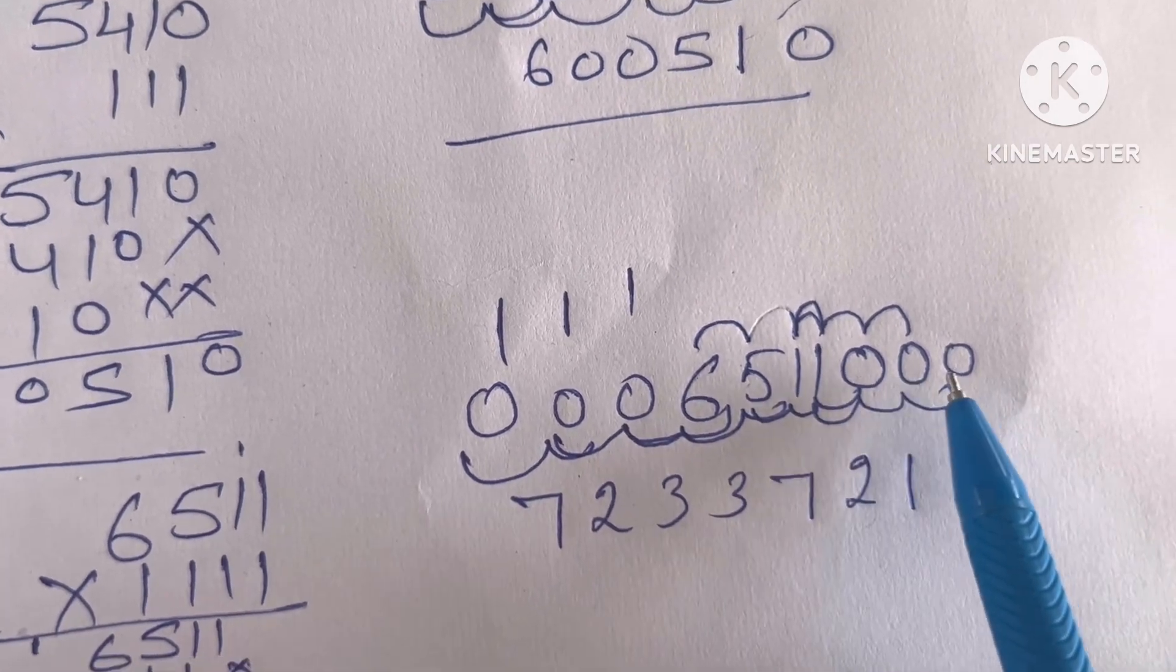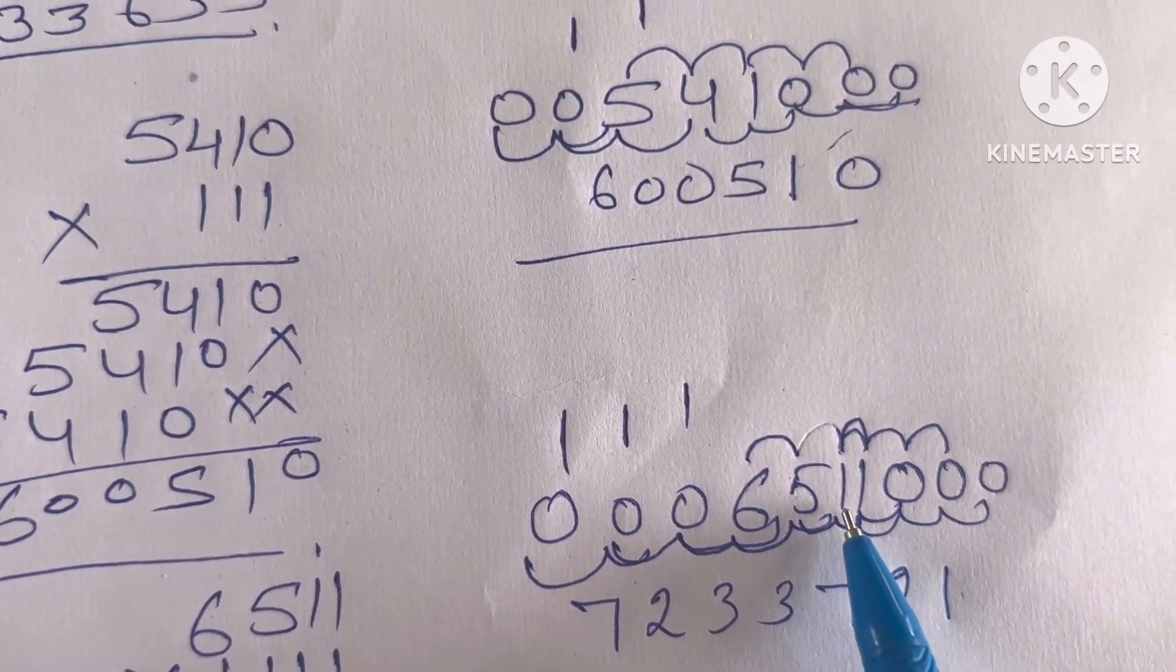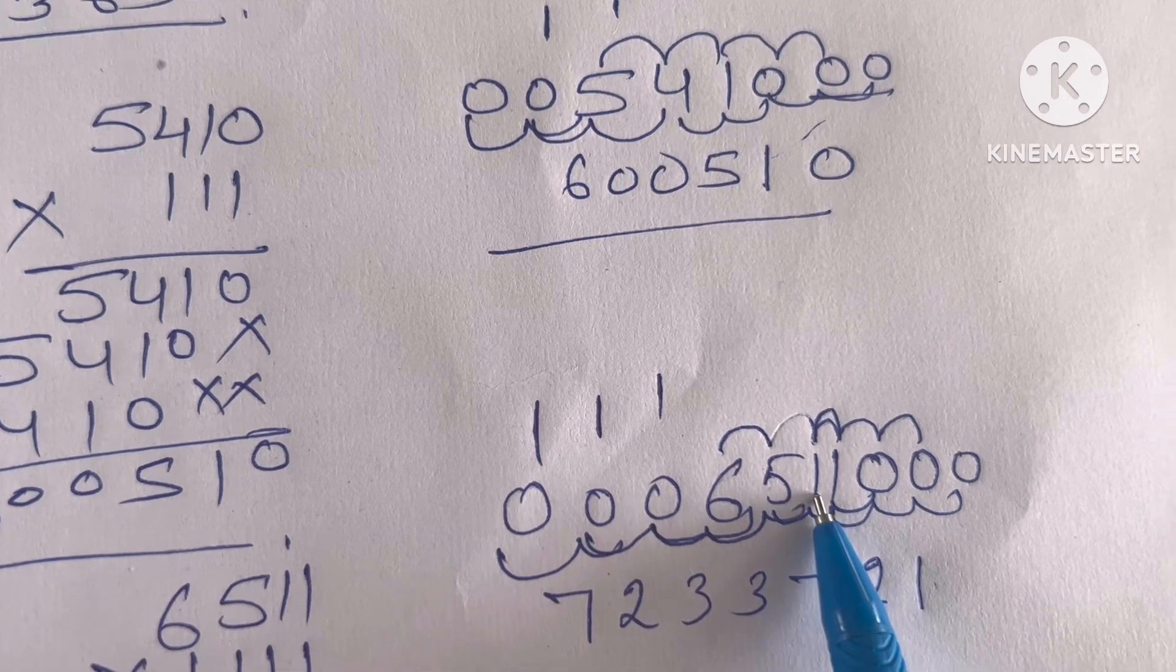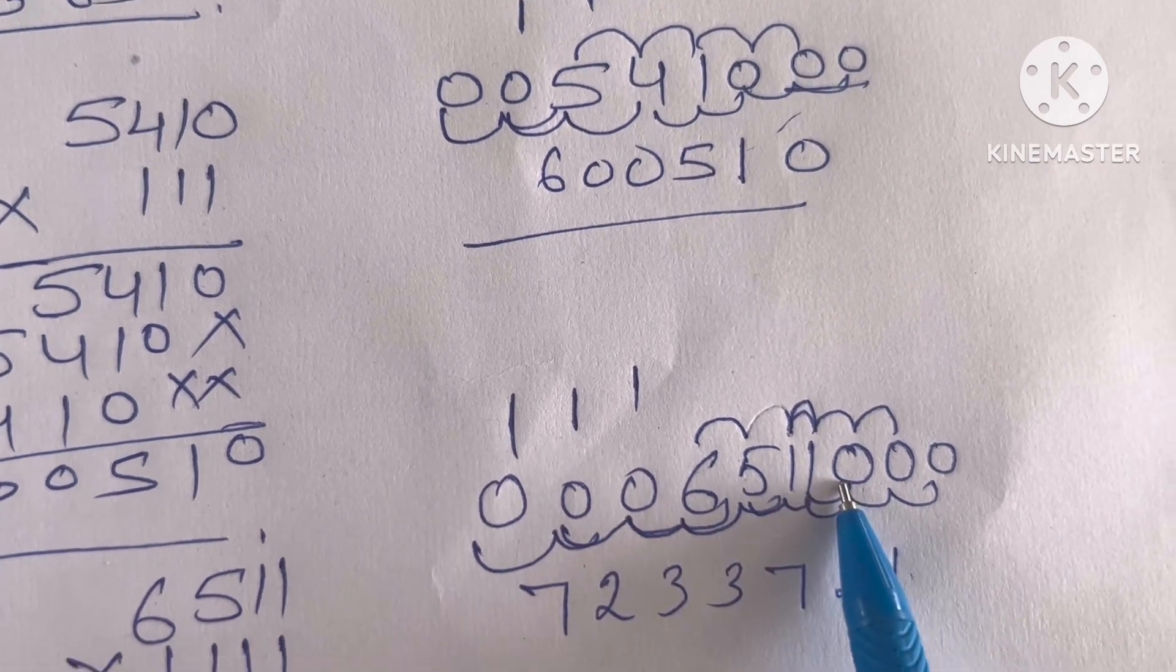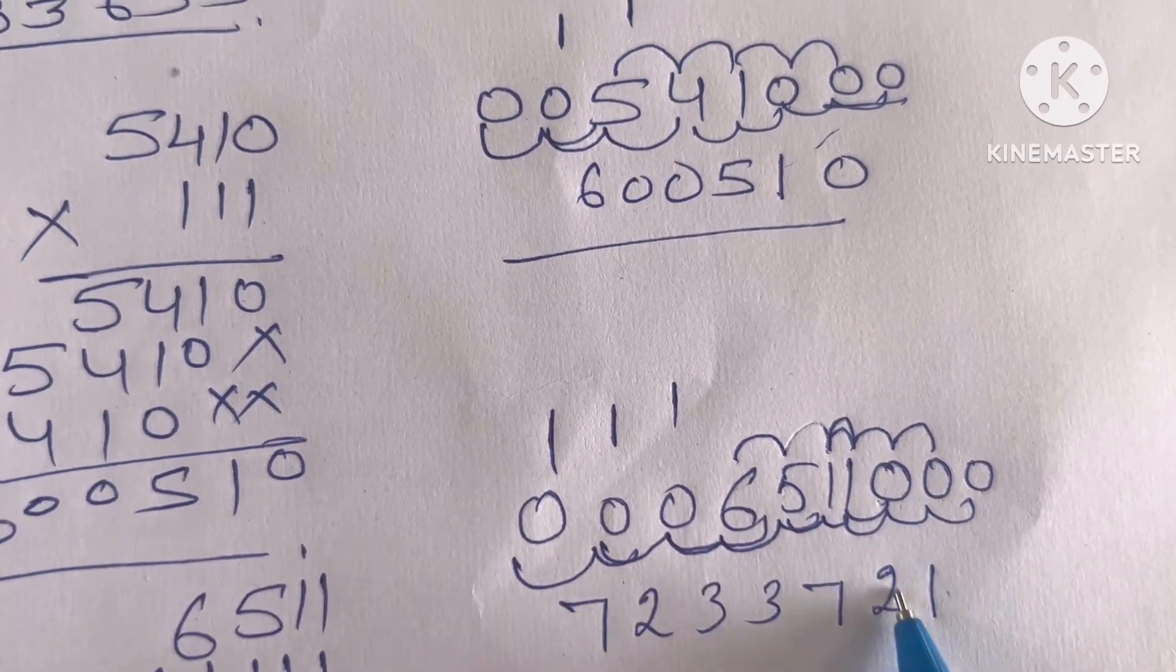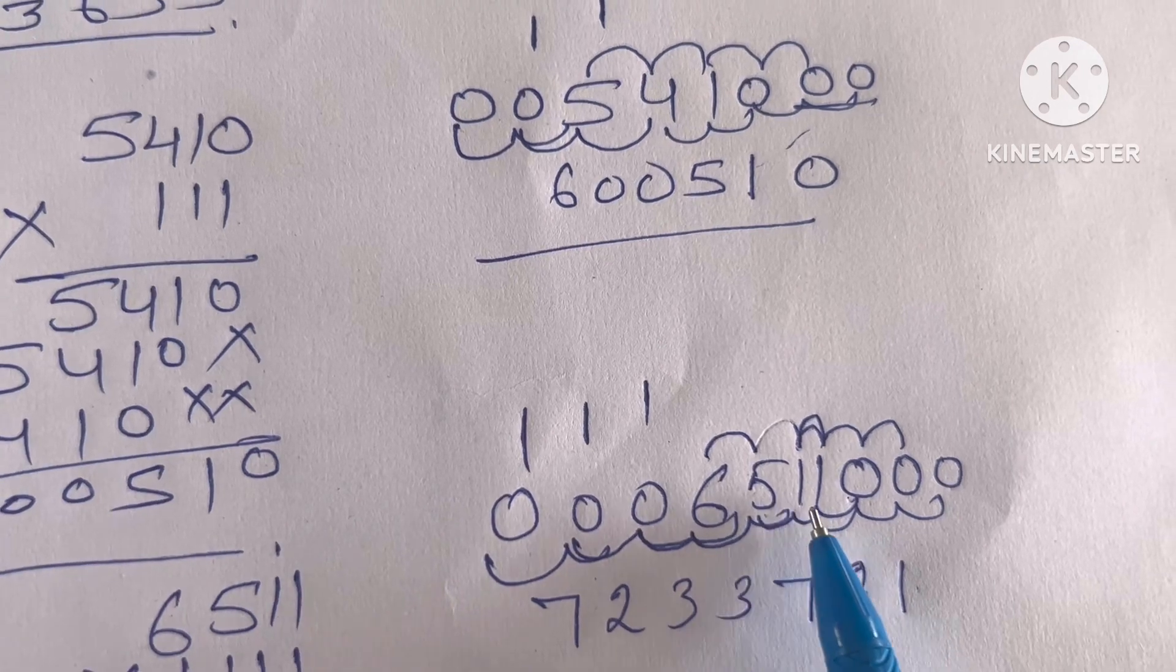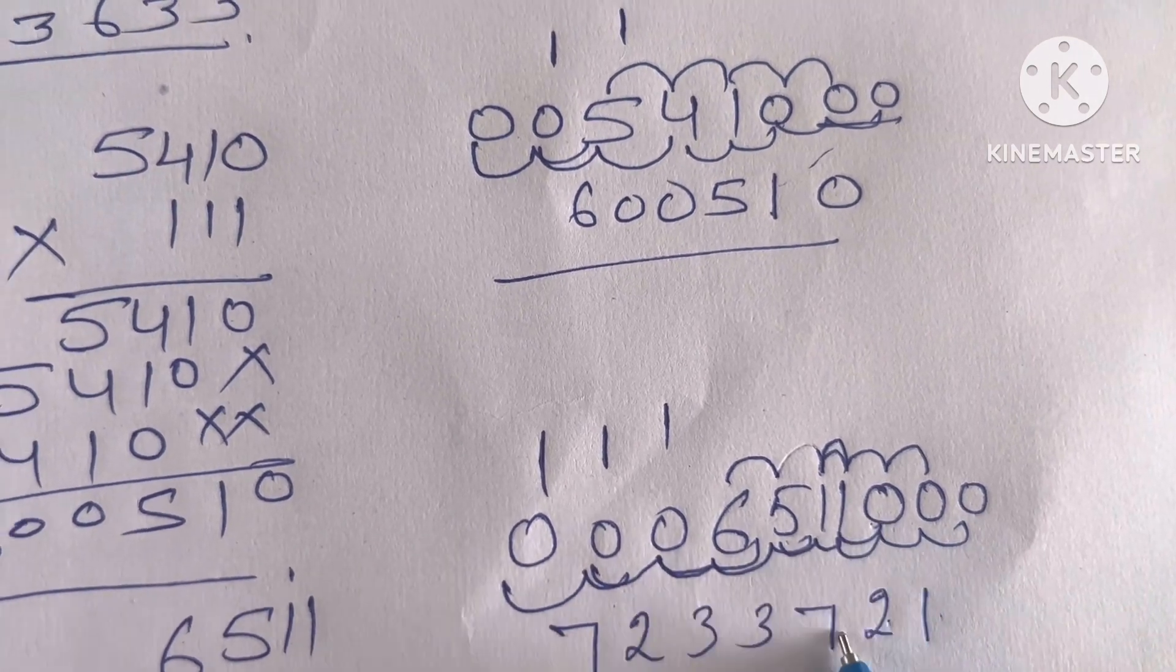1 plus 0 plus 0 plus 0, 1. Then start from next number. 1 plus 1, 2. 2 plus 0, 2 plus 0, 2. Then 5 plus 1, 6. 6 plus 1, 7. 7 plus 0, 7.